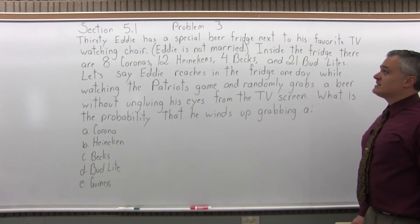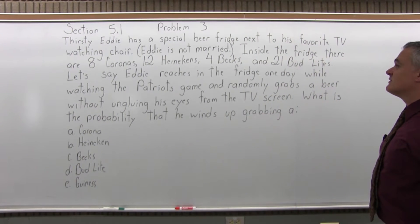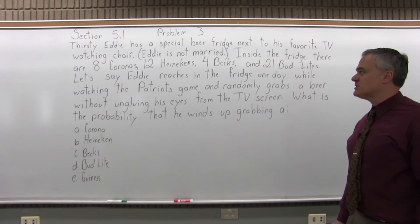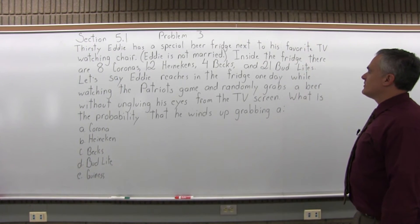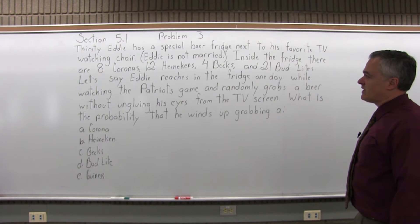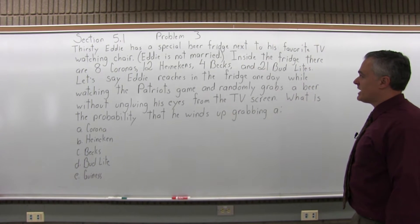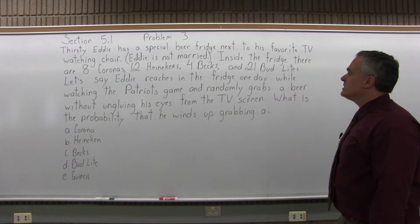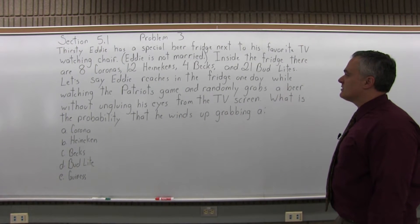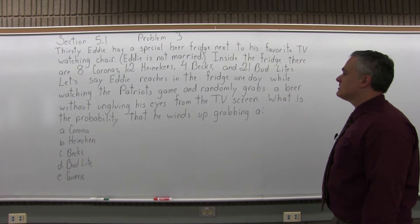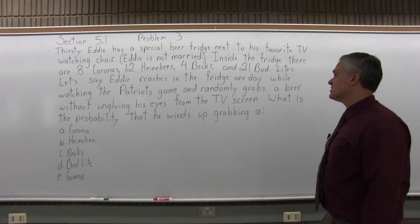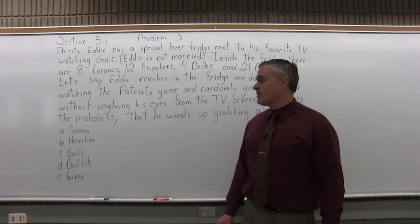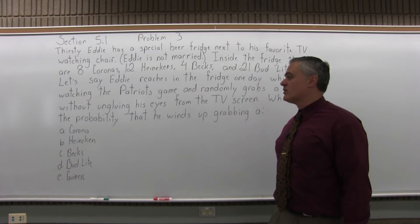The problem says: Thirsty Eddie has a special beer fridge next to his favorite TV watching chair. Eddie's not married — imagine that. Inside the fridge there are 8 Coronas, 12 Heinekens, 4 Becks, and 21 Bud Lights. Eddie reaches in the fridge one day while watching the Patriots game and randomly grabs a beer without ungluing his eyes from the screen. What is the probability that he winds up grabbing a Corona, Heineken, Becks, Bud Light, or Guinness?